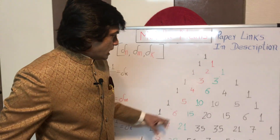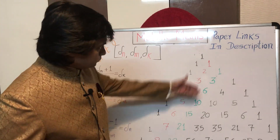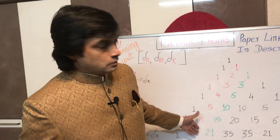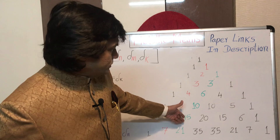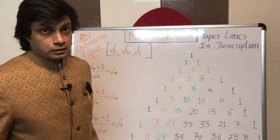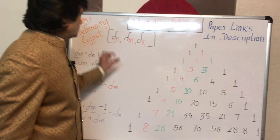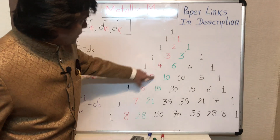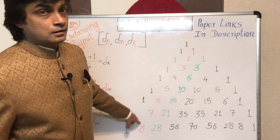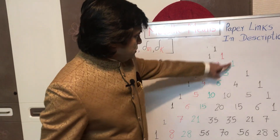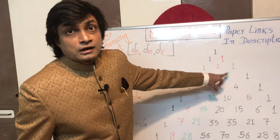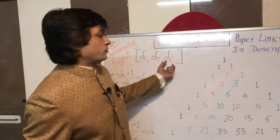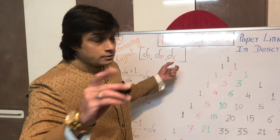Consider two diagonals of Pascal's triangle. The diagonal shown in red is the diagonal of natural numbers, and the diagonal shown in green is the triangular number diagonal. If N and M are integers from the natural number diagonal, then the values in green — the integers on the triangular number diagonal — can give us the precise value of K.